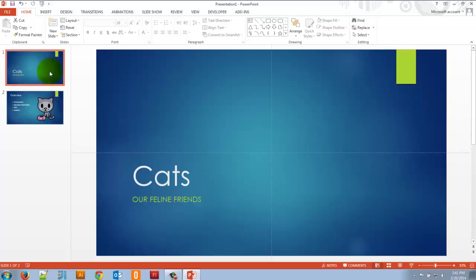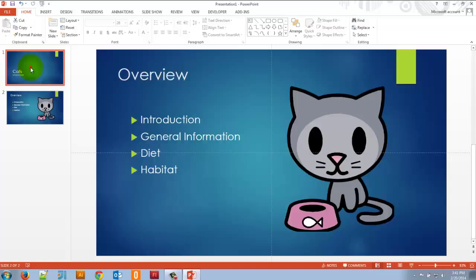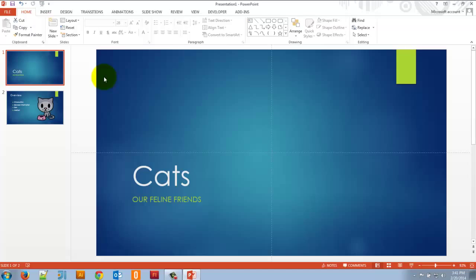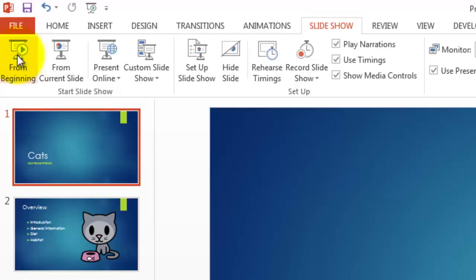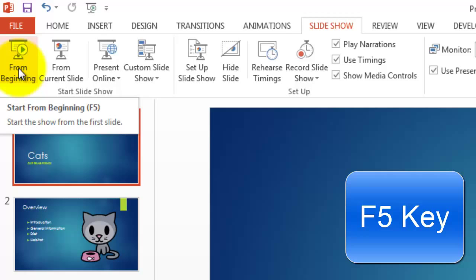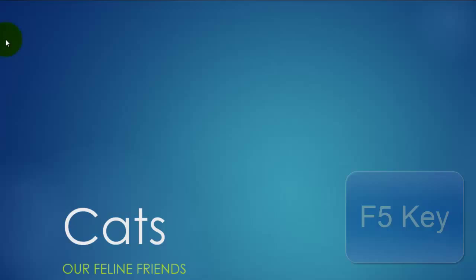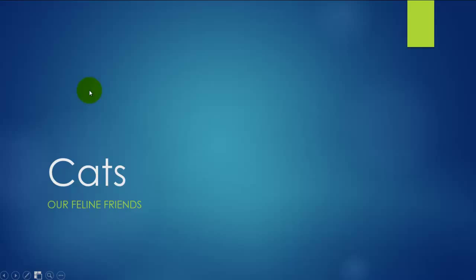So I have my first slide and my second slide. Now before we go further, what if I want to play my show to see what I have so far? I would go up to the 'Slideshow' tab, click, and then click 'From Beginning'. The shortcut is the F5 key. It shows the first slide, and I can click or press any keyboard button to move to the next slide. There are also forward and back buttons in the bottom left.